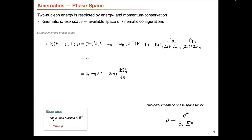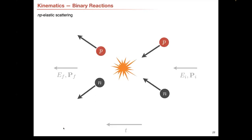This is what you can reduce the phase space to. The threshold energy is associated with zero relative momentum — for two nucleons, that's roughly 1880 MeV. This phase space factor — the two-body kinematic phase space factor — is given entirely in terms of energy: in terms of the relative momentum Q, which you can write as a square root of the energy, divided by eight pi times the energy. This factor is going to appear again and again, so I wanted to describe it here.